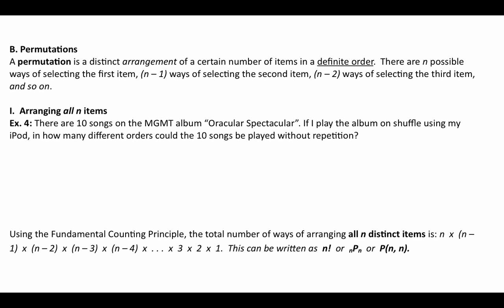Now let's combine what we learned in lessons 1 and 2 about arranging things in order with our factorial notation to make things simpler. A permutation is a distinct arrangement of a certain number of items in a definite order. There are n possible ways of selecting the first item, n minus 1 ways of selecting the second, n minus 2 ways for the third, and so on — with no repetition.